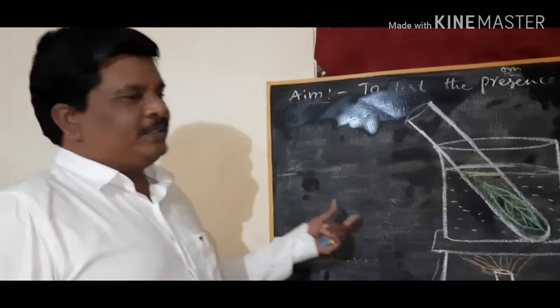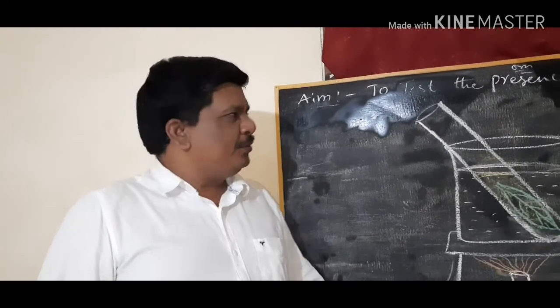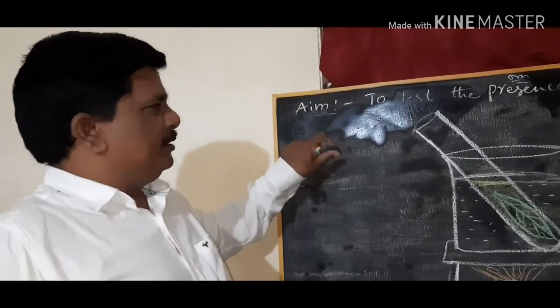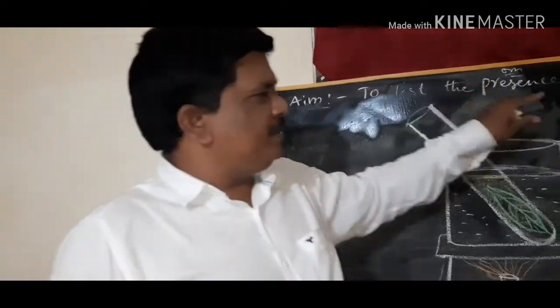Today I will discuss experiments related to photosynthesis. In this first chapter of nutrition, we will see different lab activities. The first one is to test the presence of starch in leaves.